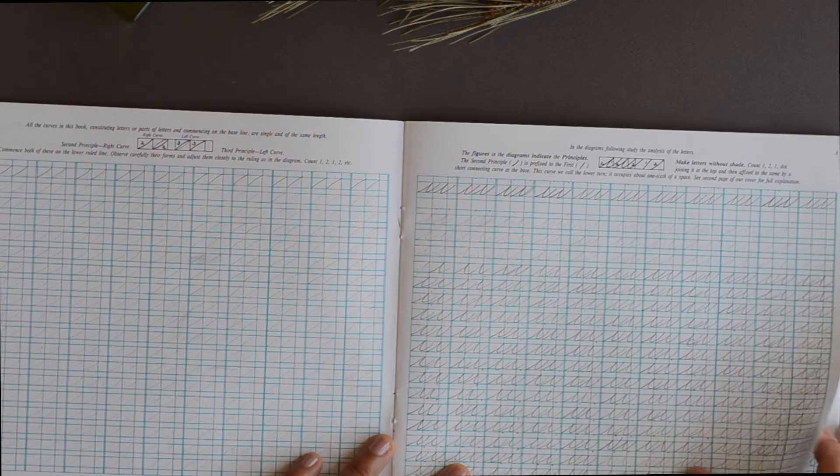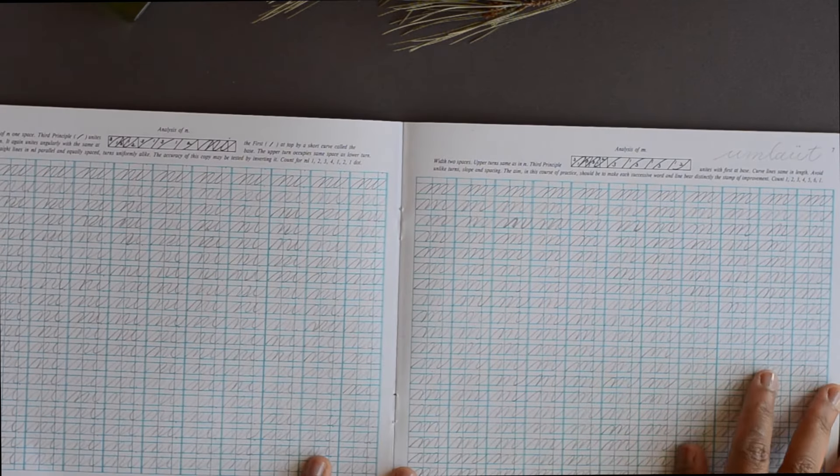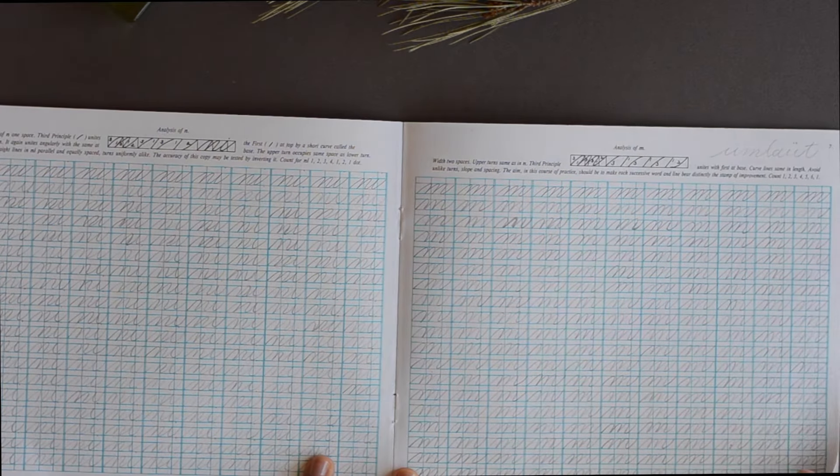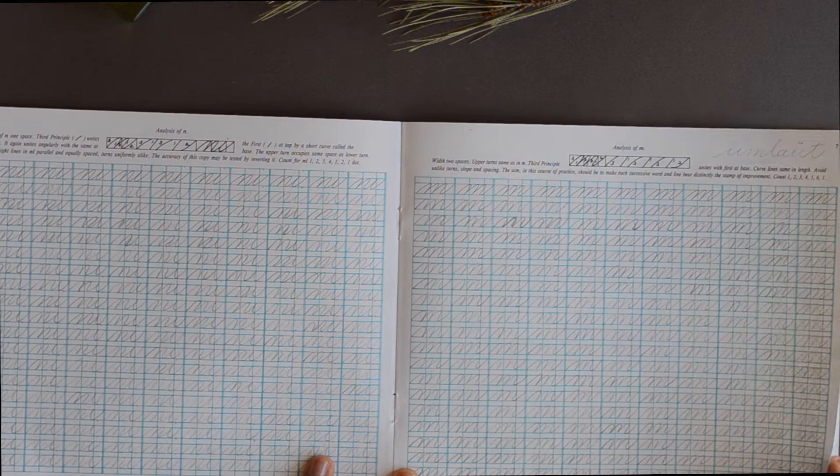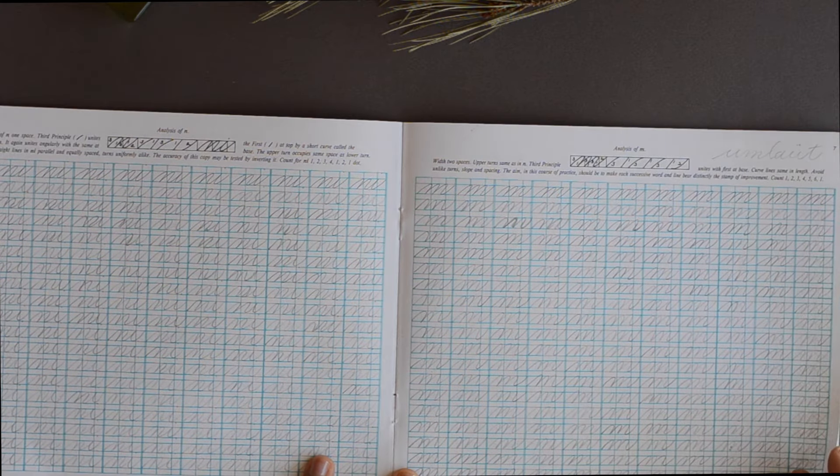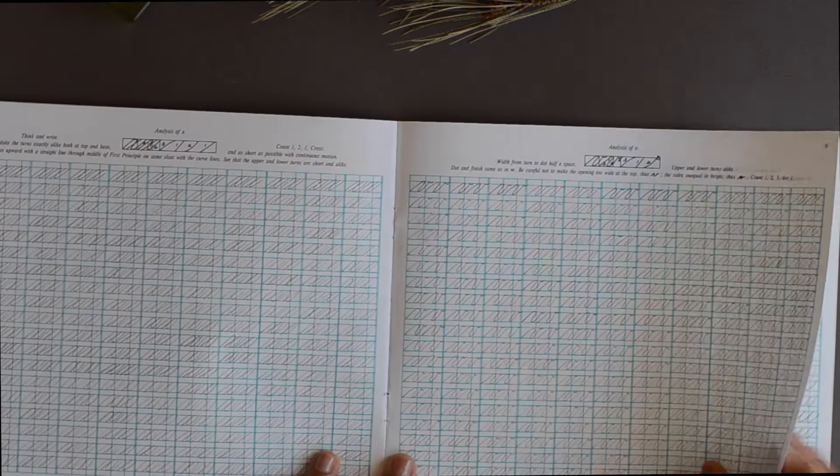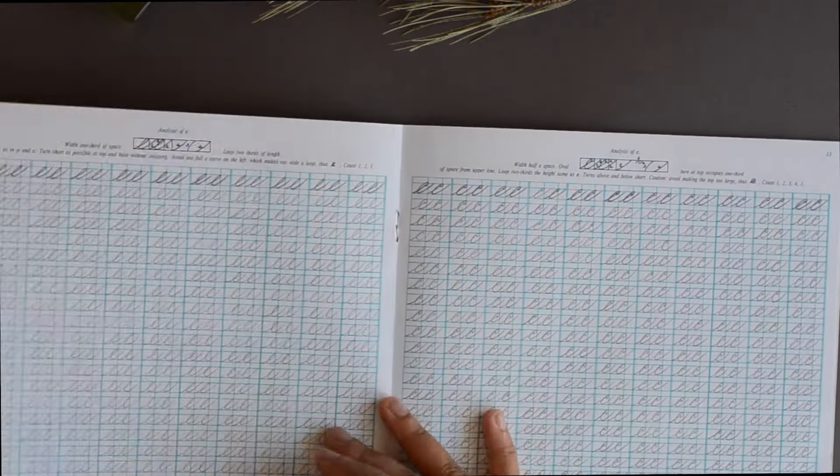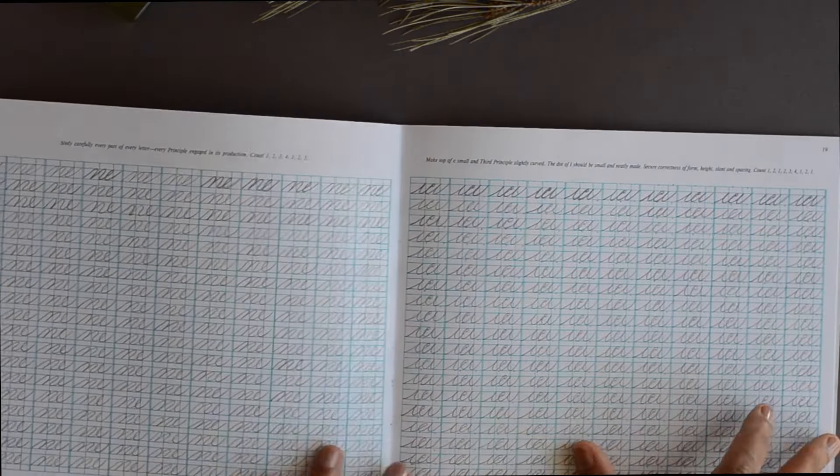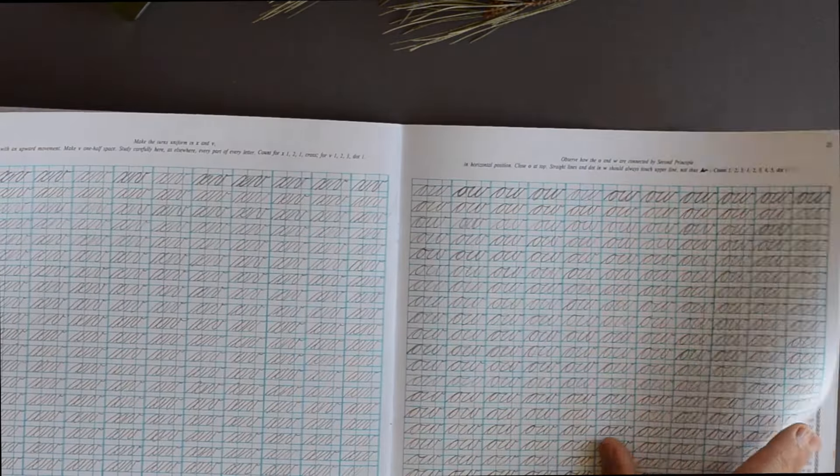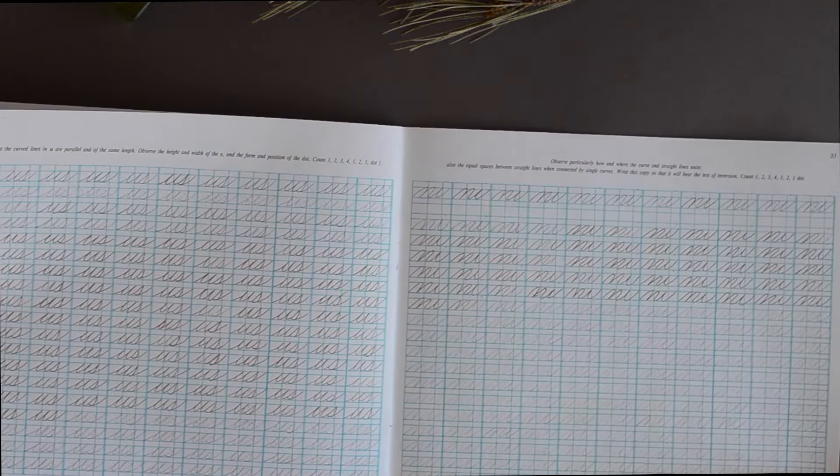So I started these workbooks about a year ago and I was really unconfident with my writing as I started. You might be able to see here in the lines, my connective lines between my letters aren't very good. They all kind of look different. There's not great consistency. So I definitely struggled to keep the motivation and I think it took me almost like 4 or 5 months to finish the first book. I would just do a little bit here and there.